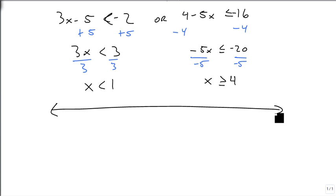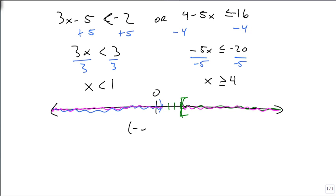Now looking at our answer on the number line: the first solution starts at 1 and goes to the left, because x is smaller than 1. The next one starts at 4 with a square bracket and goes to the right. Our OR rule says if anything is shaded, it's in the answer. So we go from minus infinity to 1, then start back up at 4 and go to infinity. We use the union symbol to combine these two intervals, saying anything from this region or this region is true.